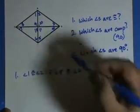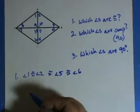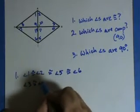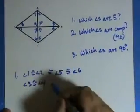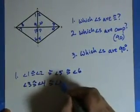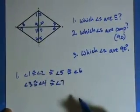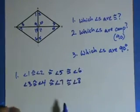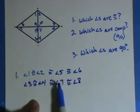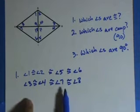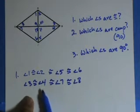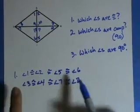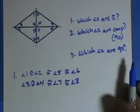One, two, five, and six are all congruent. Another set: angle three is congruent to angle four, and that's congruent to angle seven and angle eight. I know this notation probably offends some math teachers, but I'm being lazy and writing them together rather than separately.